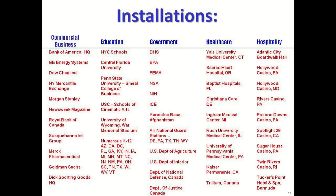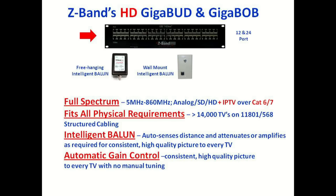Here we have the HD video hub that comes in both a 12 and 24 port version, and directly below is our free-hanging and wall-mount version of the Intelligent Balun. These two pieces of equipment work together to deliver the full spectrum of RF video — 5 to 860 MHz — over a single piece of structured cable. This frequency range is where all of your analog, standard definition, and high definition channels live. You can go completely analog and have up to 134 channels, or double that with high definition for 268 channels, or mix and match.